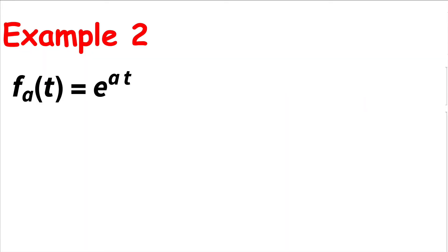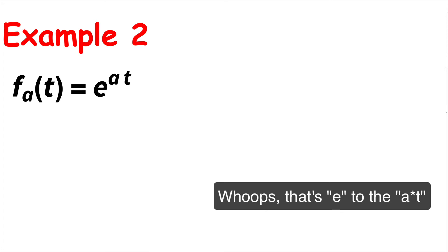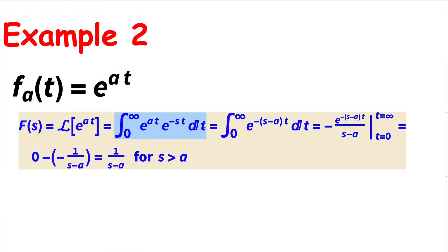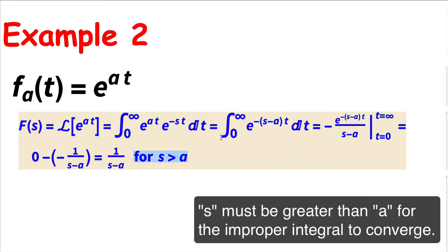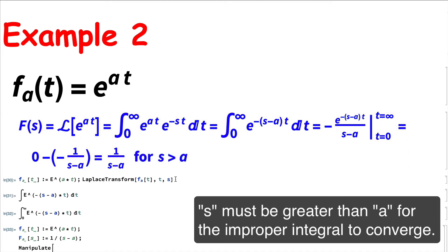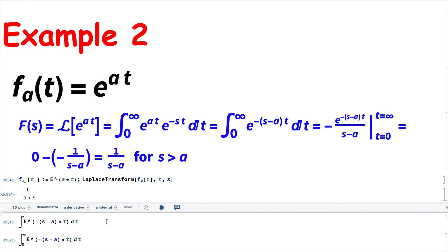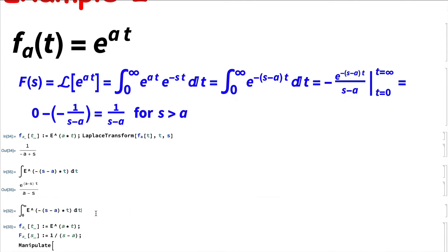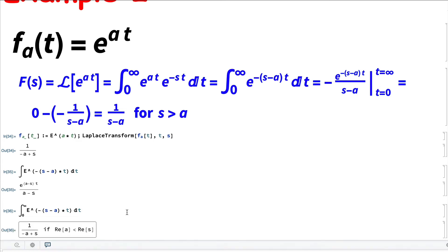For the second example, we consider a family of exponential functions: f_a(t) = e^(at). This is important because exponential functions appear constantly in differential equations. The Laplace transform of e^(at) is, by definition, an integral that simplifies via properties of exponents to 1/(s − a), for s > a. Here a can take any value. Mathematica confirms the antiderivative and the improper integral answer, noting the real part of s must exceed the real part of a.